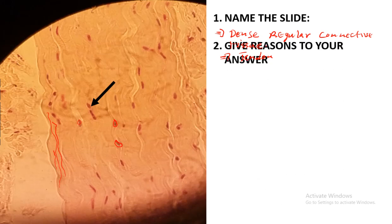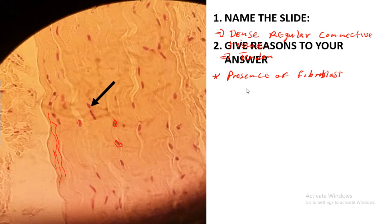Give two reasons for your answer. The first reason is the presence of fibroblasts. Fibroblasts have the function of producing the extracellular matrix, and this extracellular matrix also contains collagen fibers.